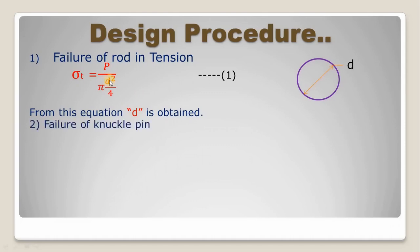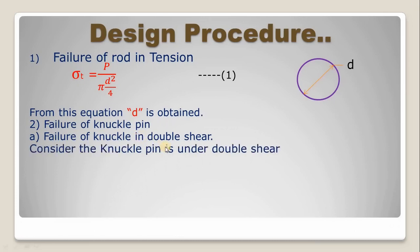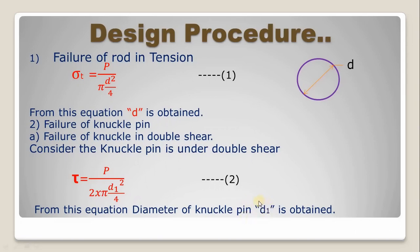The second step is failure of knuckle pin in shear. The knuckle pin is in double shear, so the area becomes 2 into pi by 4 D1 squared. The equation becomes: tau equal to P divided by 2 into pi by 4 D1 squared. From this equation we can calculate the diameter of knuckle pin.